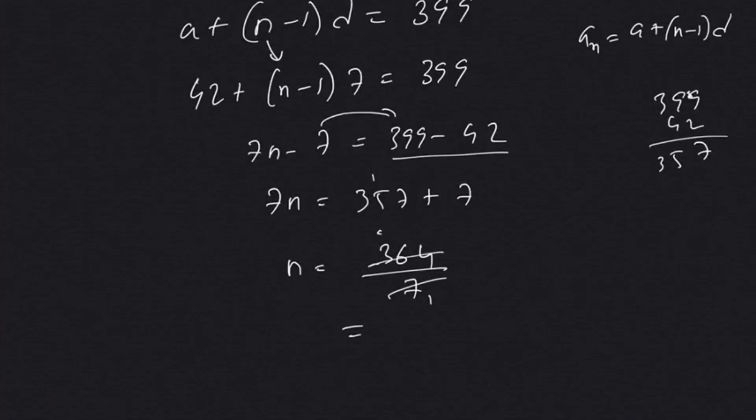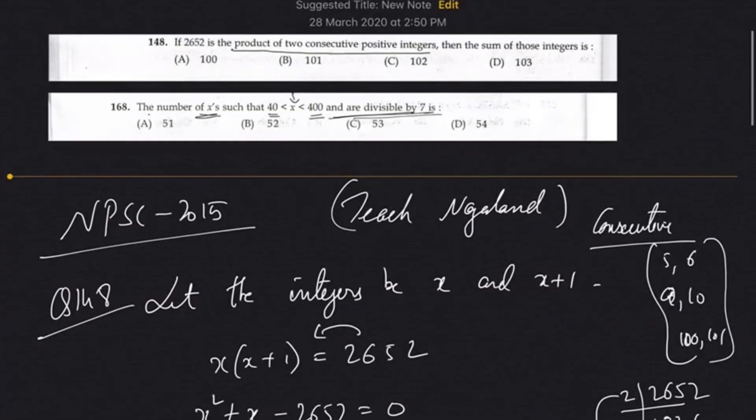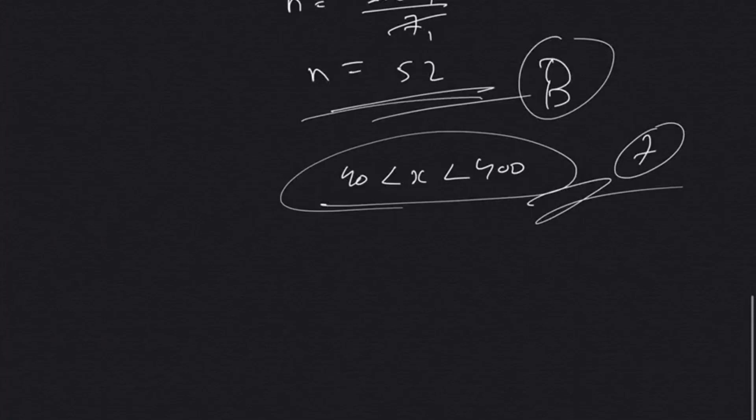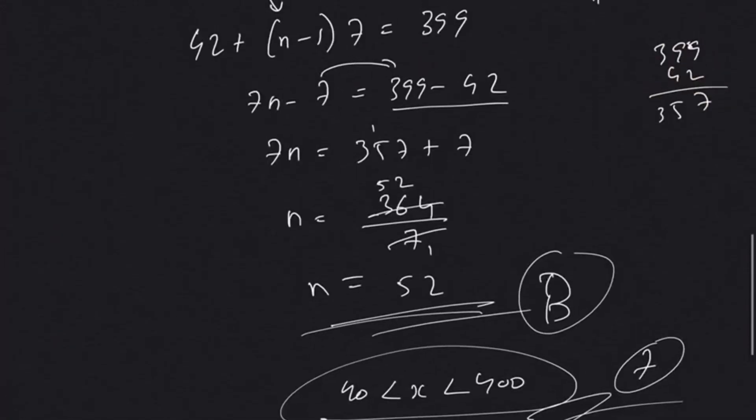Seven ones are 7, 7 fives are 35, 14, 2 is 52. That means there will be 52 numbers between 40 and 400 which will be divisible by 7. That is option B. Our answer is this. Thank you, I hope you've liked this.